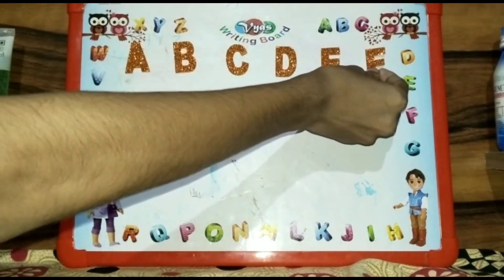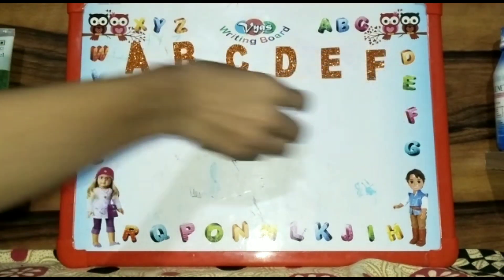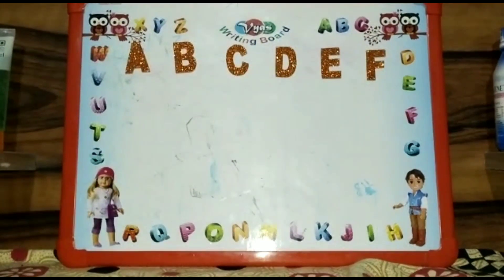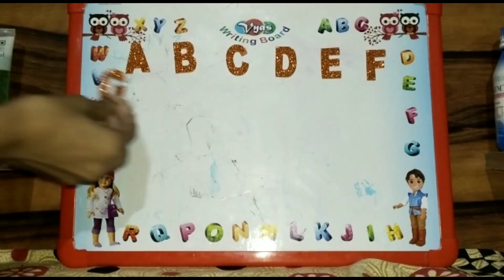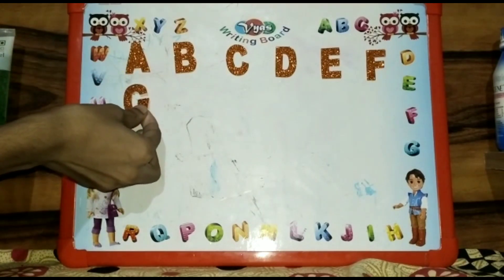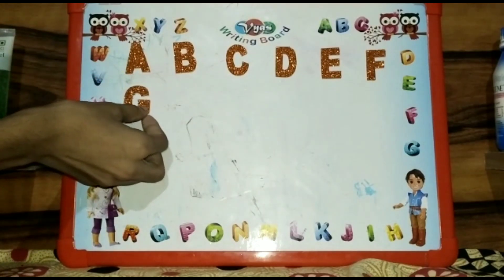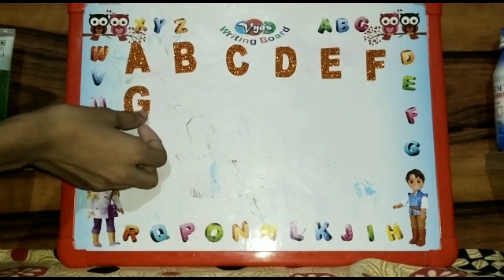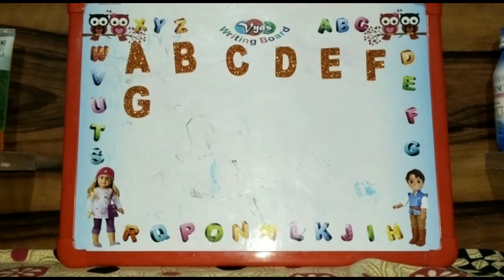F is for Fish. Fish yani machli. G is for Girl. Girl yani ladki.